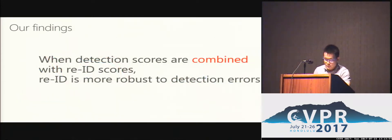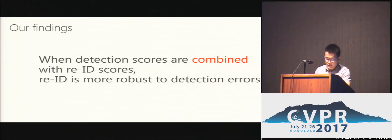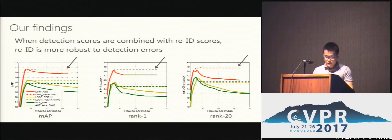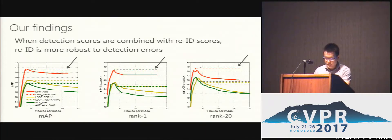Our second finding is that when detection scores are combined with re-ID scores, re-ID is more robust to detection errors. This finding provides insights on how pedestrian detection can help person re-ID. As you can see from the results, when the gallery gets larger — meaning more boxes per frame — re-ID results may drop due to more distractors. Using our method, re-ID accuracy will remain stable against the inclusion of more distractors.